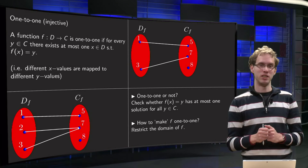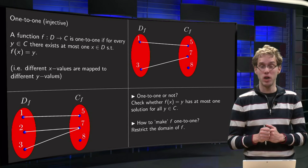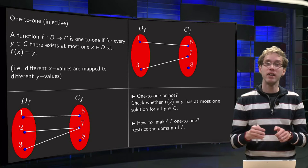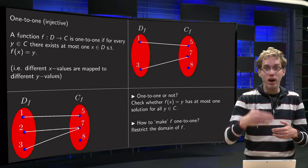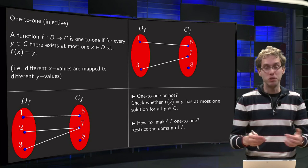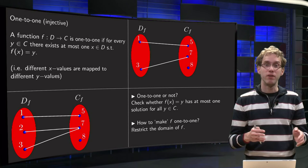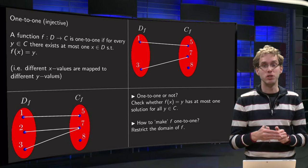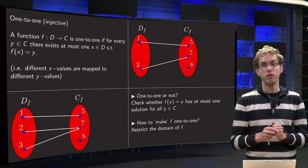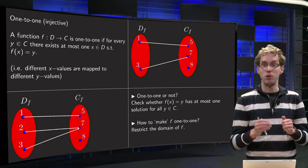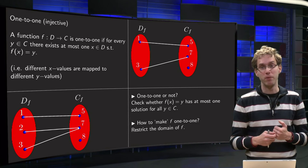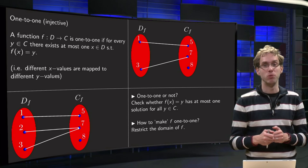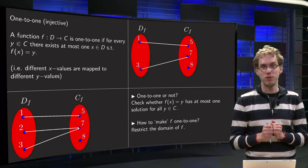You have to look at the function f(x) = y, and you have to look for all y's in the codomain, how many solutions this equation has. If you have y's for which there is more than one solution, then your function is not one-to-one. And if f(x) = y has only one solution for all y in the codomain, or zero solutions, then your function is one-to-one.